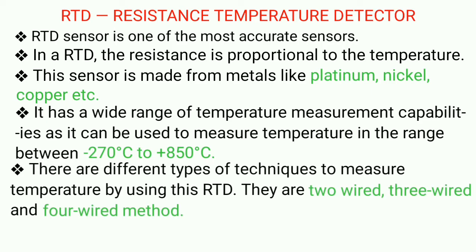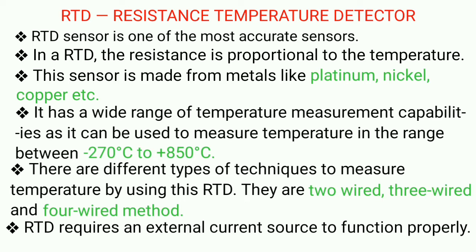It is used to measure temperature in the range of minus 270 degree centigrade to 850 degree centigrade. There are various methods to measure the temperature using RTD like 2 wire, 3 wire and 4 wire methods. I will discuss these in detail in my upcoming videos. Also, it requires an external current source to function properly.